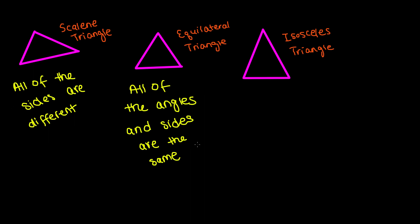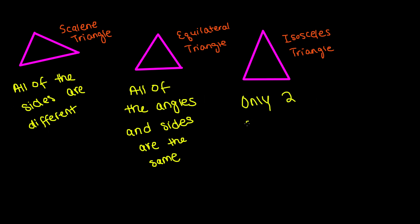Next and last, we have our isosceles triangle. In an isosceles triangle, only two of the sides are the same measurement, and one of them is different. So only two sides have the same measurement.